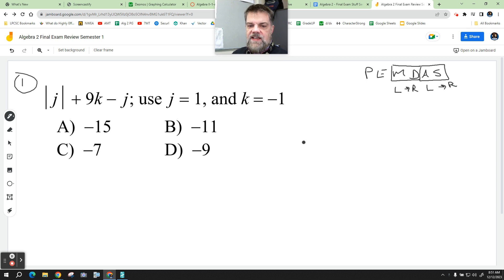All right, so when I say the absolute value of J plus 9 times K minus J, wherever there's a J, I'm going to plug in a 1. Wherever there's a K, I'm going to plug in a negative 1.